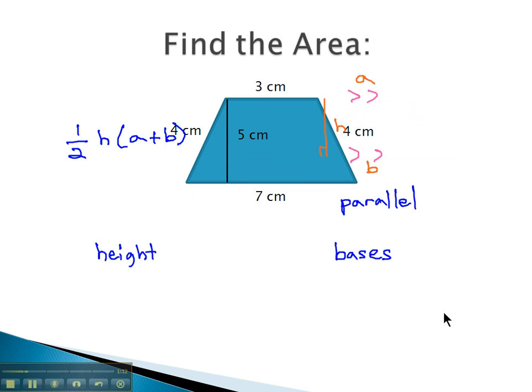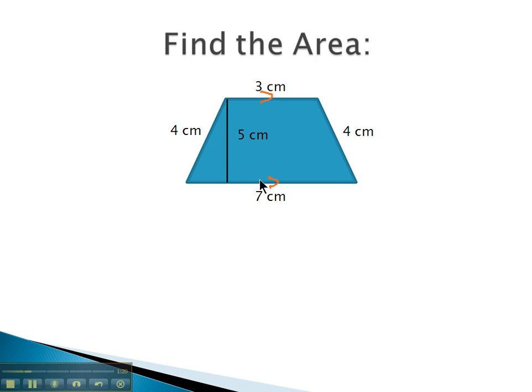Let's try an example. This first example is a classic trapezoid. The bases are going to be the parallel sides going the same direction, and we can see that's 3 centimeters and 7 centimeters. We'll call those A and B.